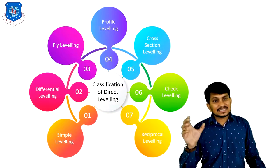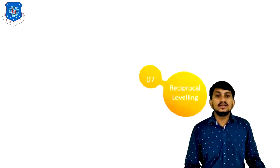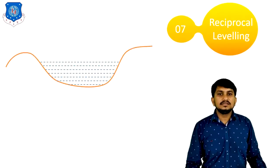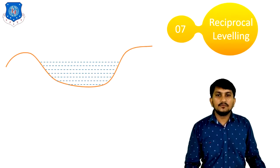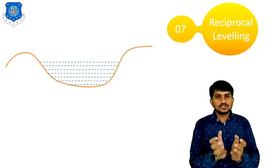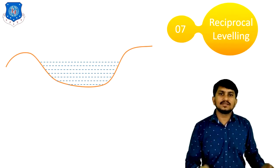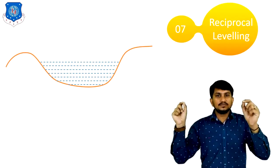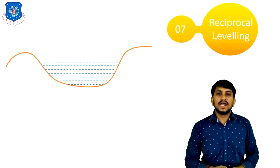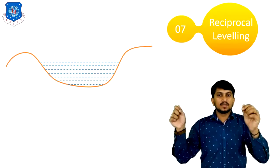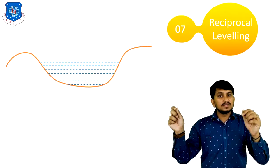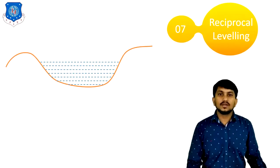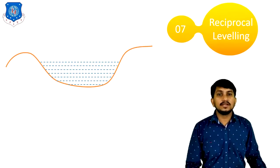Now let's discuss the last type of leveling, which is reciprocal leveling. Suppose there is a ground condition where the center position is filled with water or a river is passing through. Our points are on the two banks of the river and we have to find the level difference between these points. We cannot set up our instrument in between because of the water. In this type of condition, reciprocal leveling is used.